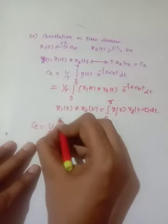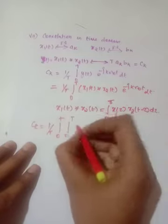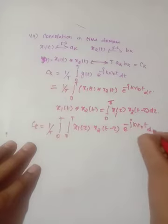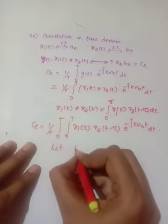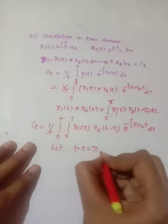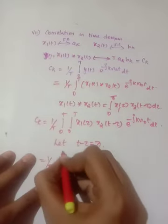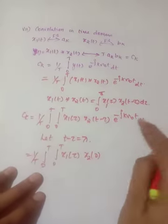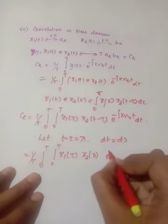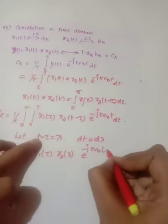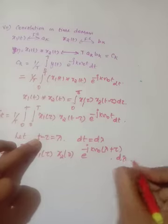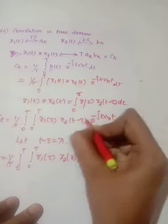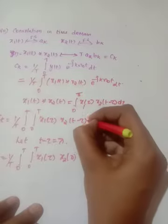Applying the formula: ck = (1/T) integral from 0 to T of [integral from 0 to T of x1(τ) · x2(t−τ) dτ] · e^(−jkω₀t) dt. Now let t−τ = λ, so t = λ+τ. Substituting, we get (1/T) double integral of x1(τ) · x2(λ) · e^(−jkω₀(λ+τ)) d λ dτ.